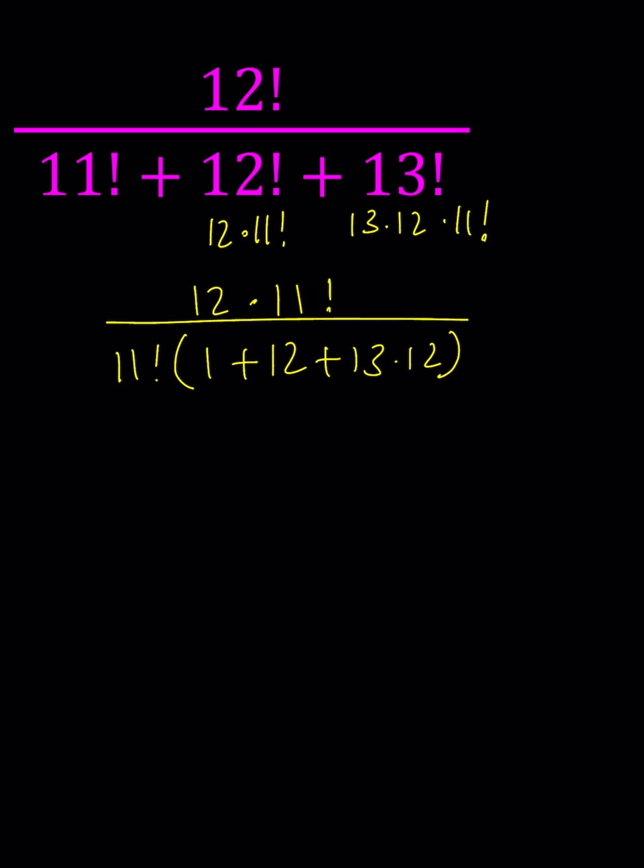We can go ahead and simplify 11 factorial and then we're going to get the answer. Now what is 13 times 12? Let's go ahead and find out or you can also do the following. Factor out a 12 here. That will be 12 times 14 plus 1. Maybe you know that 12 times 14 is 168. 168 plus 1 is 169.